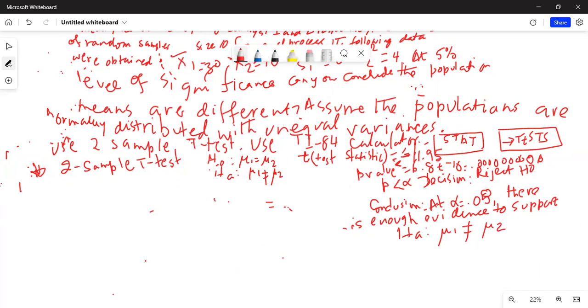There is another way we can do this test. Again we press the stat button, test, and then we scroll down to two sample t-interval on the calculator and hit enter.